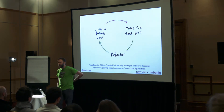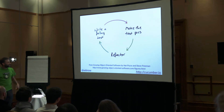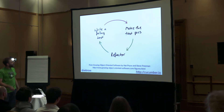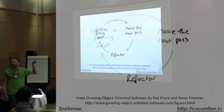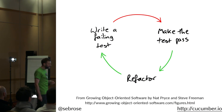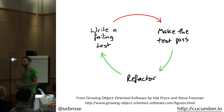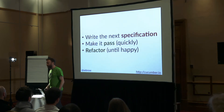This is your classic TDD cycle, popularized in Nat Price and Steve Freeman's book 'Growing Object-Oriented Software Guided by Tests.' You start off — it's generally described as: write a failing test, then you make the test pass, then you refactor, and you keep going around this loop. It's got three little statements and colored arrows, but within that there's a lot of nuance.